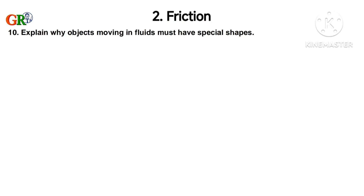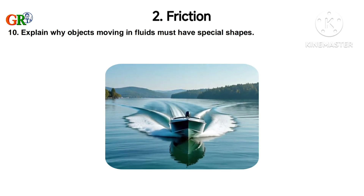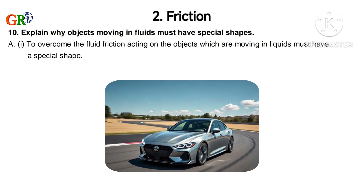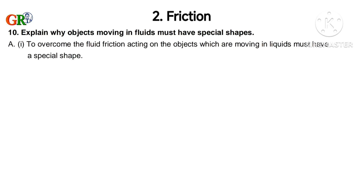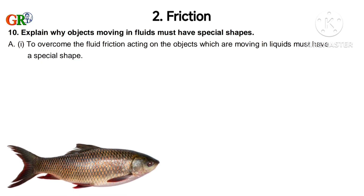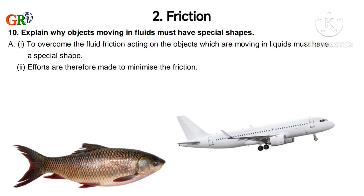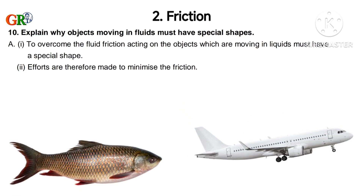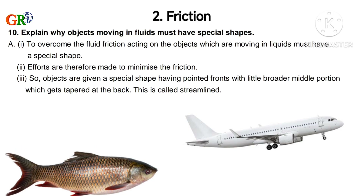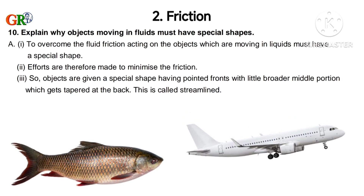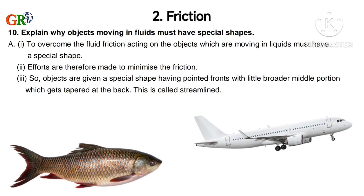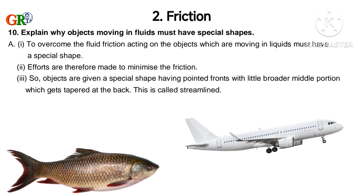Tenth question: Explain why objects moving in fluids must have special shapes. To overcome fluid friction, objects moving in liquids must have a special shape. Efforts are made to minimize the friction, so objects are given a special shape with a pointed front, a wider middle portion, and tapered at the back. This is called a streamlined object.